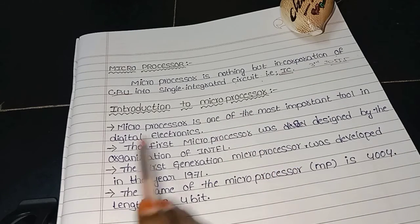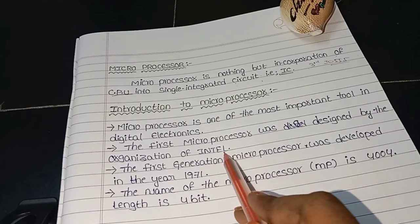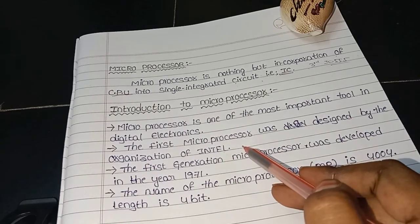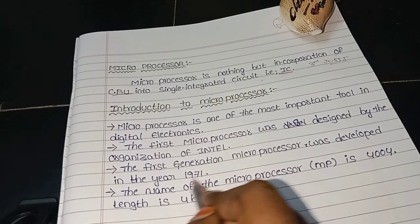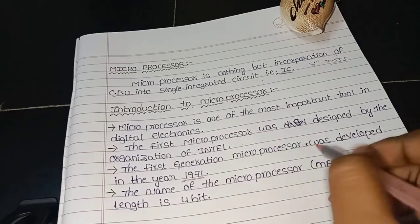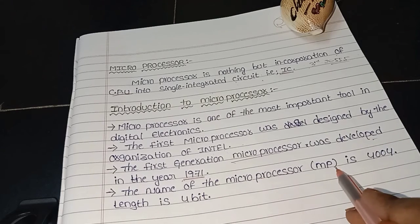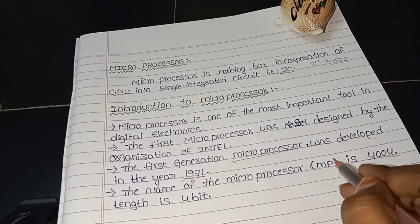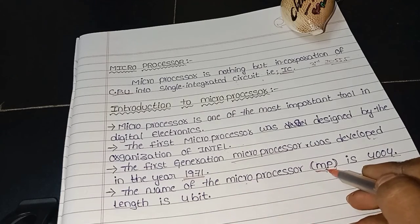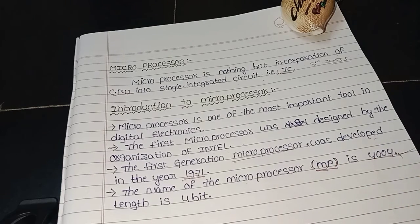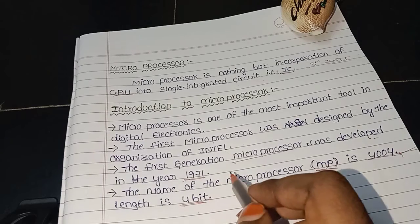The first microprocessor was designed by Intel. The first generation microprocessor was developed in 1971. The Intel company developed it. The name of the microprocessor is 4004 — MP is the shortcut for microprocessor. This is the first microprocessor, with a length of 4-bit. This is what the Intel company introduced.